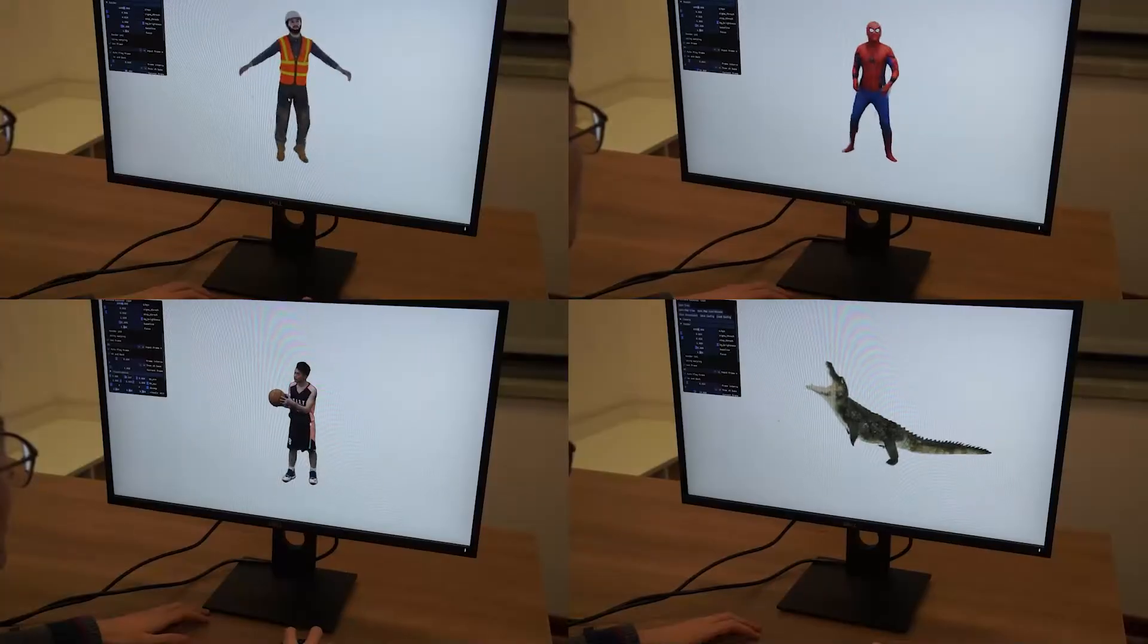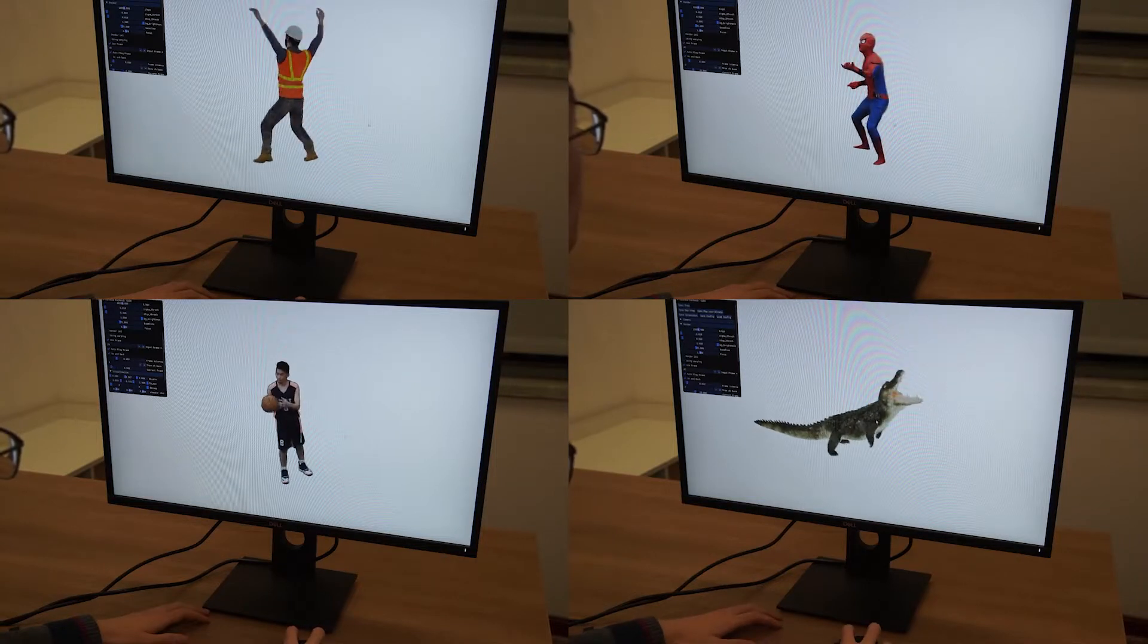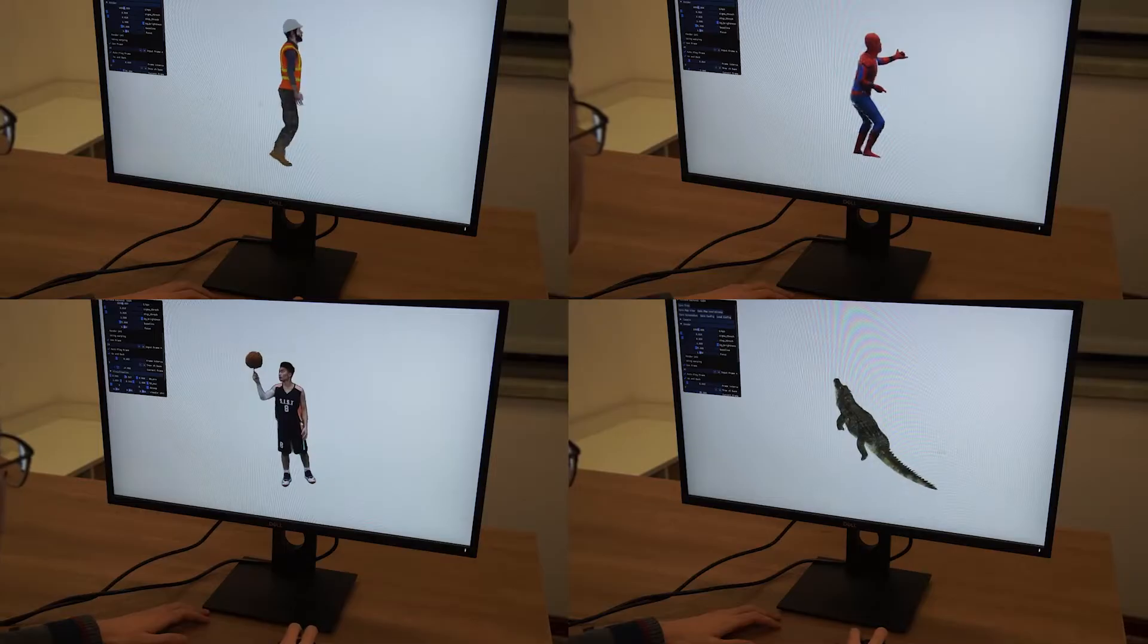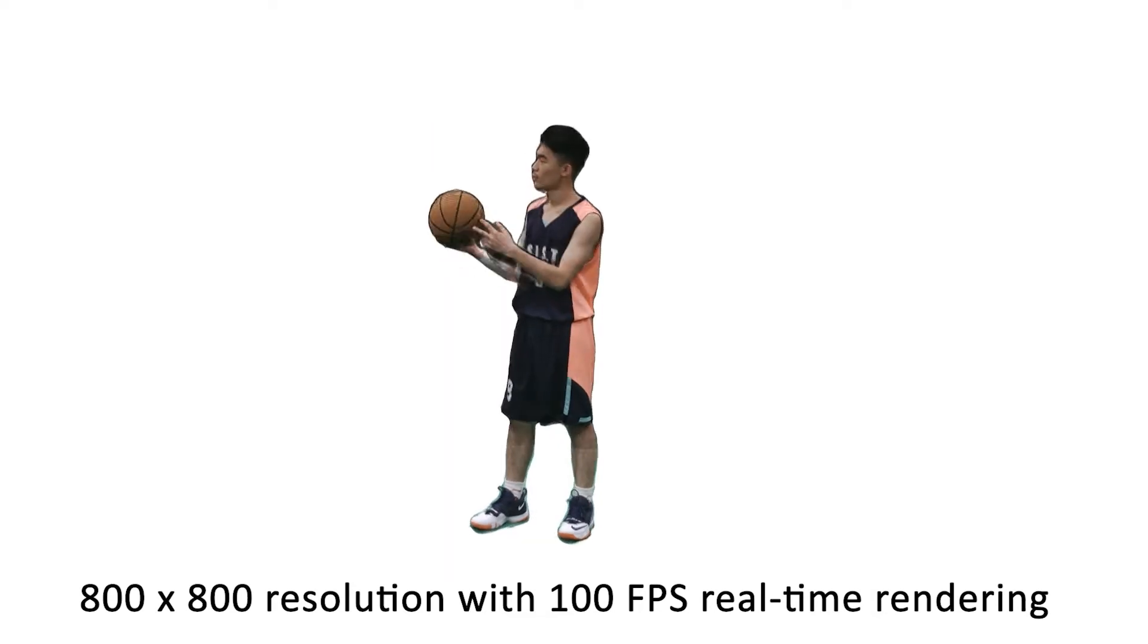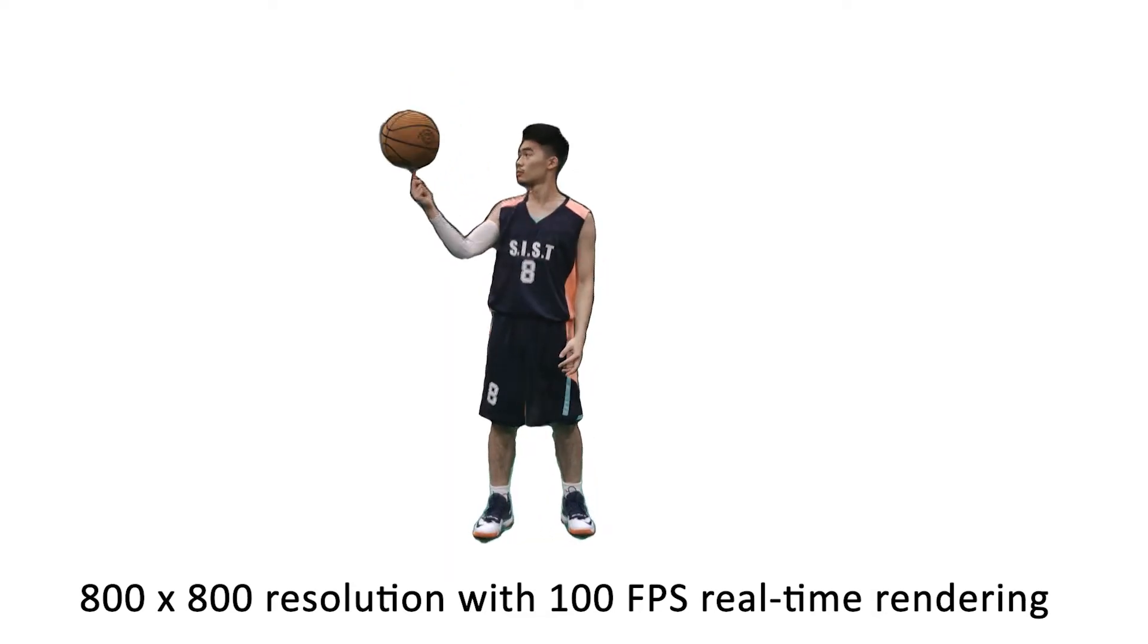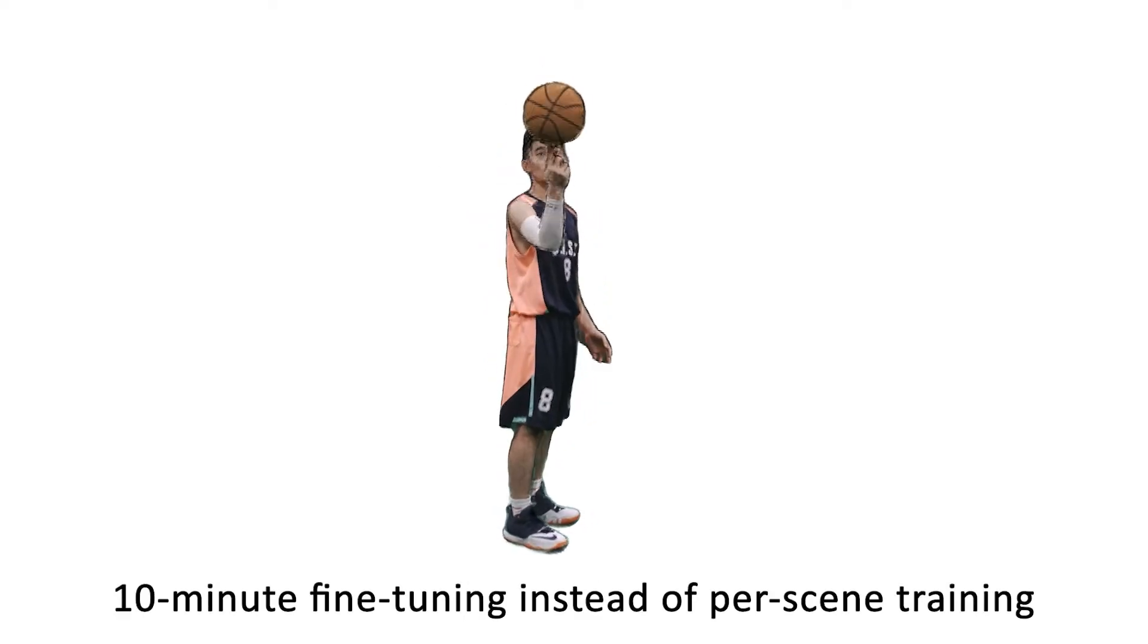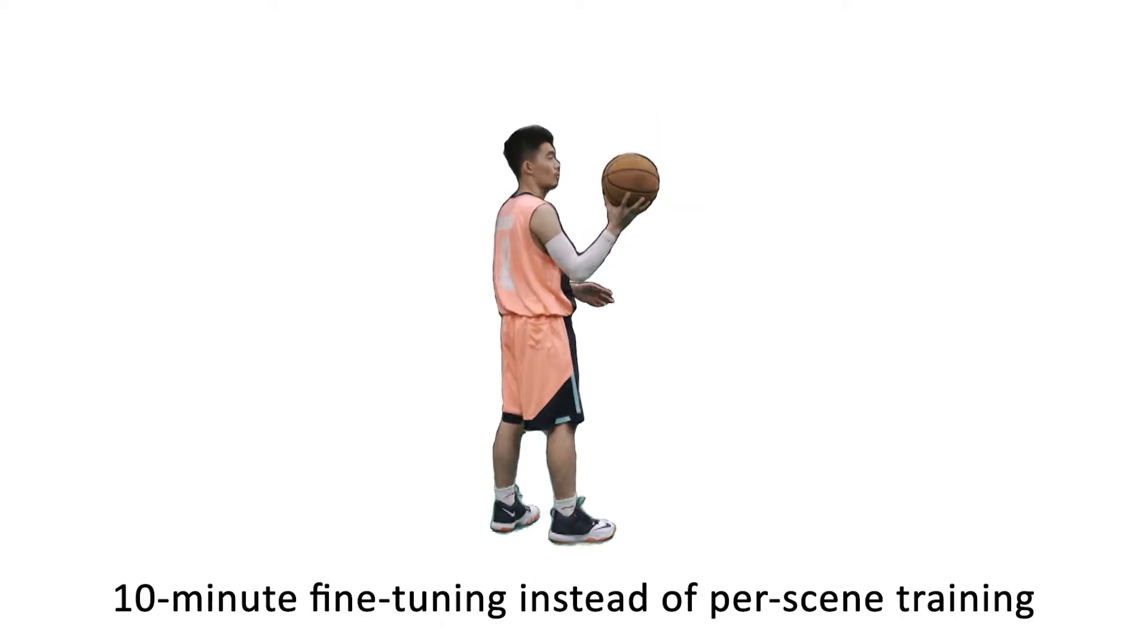Here are more of our results. Our method achieves rendering speed at 100 FPS with 800x800 resolution, which is approximately 3,000 times faster than the original NeRF. We achieve high-quality results for every frame with a 10-minute fine-tuning without the need of a long time per-scene training.